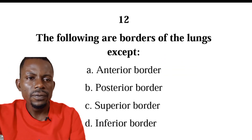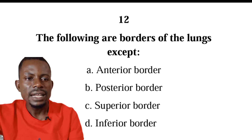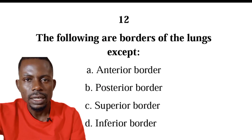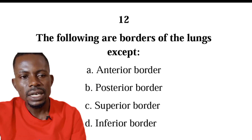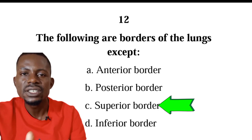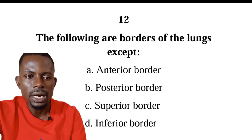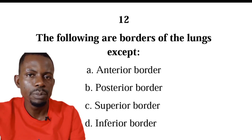Number twelve: the following are borders of the lungs except — anterior border, posterior border, superior border, or inferior border. The correct answer is C, superior border. The lungs have anterior border, posterior border, and inferior border, but there is no superior border. The superior border is instead referred to as the apex.